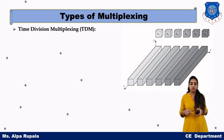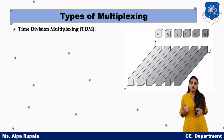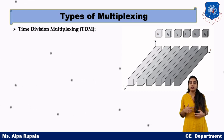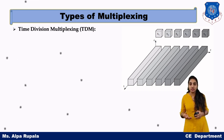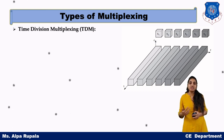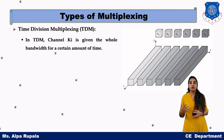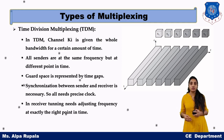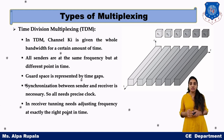Each user is given a time slot followed by a guard space. All user data is carried by a single channel in a short period of time, so it will look like all users are simultaneously sending data. The advantage is higher data rate because the full bandwidth is used. The disadvantage of TDM is that it requires proper synchronization between sender and receiver, and synchronization is a must.